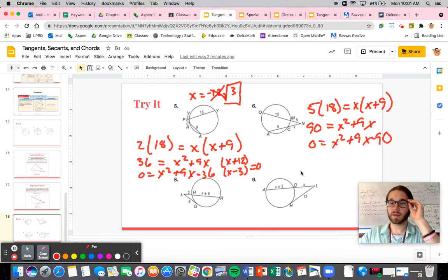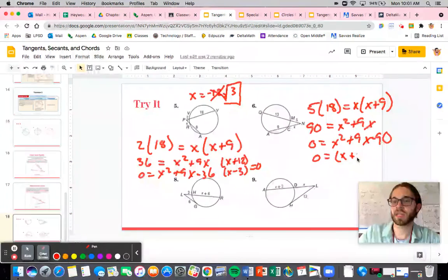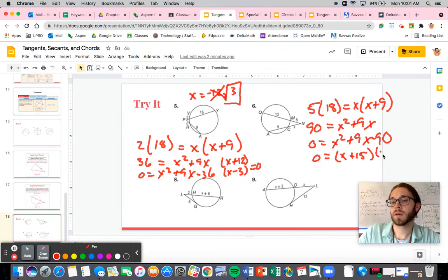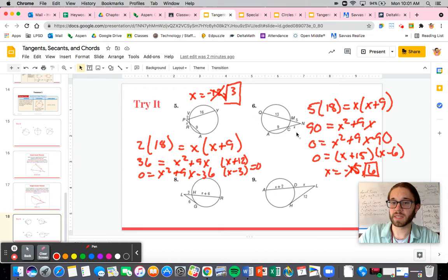So now we need to find factors of that that'll add up. And I believe it would be 15 times six. So zero is equal to X plus 15, X minus six. So X is equal to negative 15, positive six. So my answer is just going to be positive six, because if I plug in negative 15 here, I have a negative 15 length. That makes no sense.